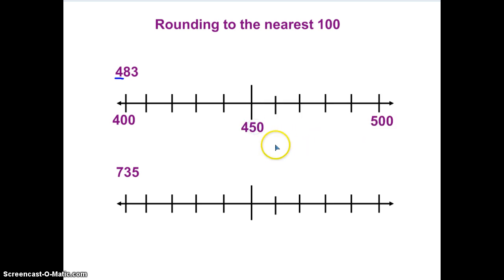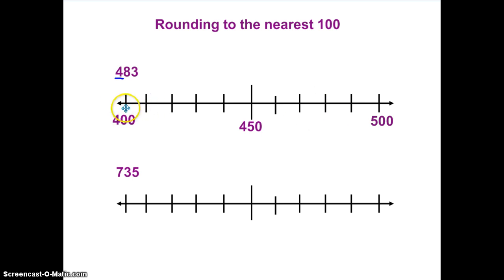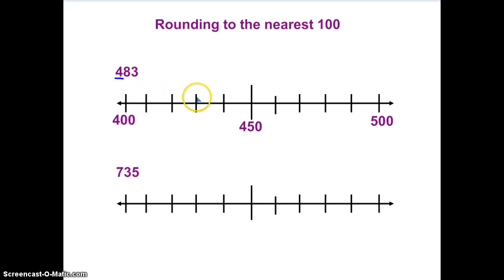I'm not dealing with fives anymore, I'm dealing with fifties: 0, 50, 100. In this case, 400, 450, 500. Let's count — usually there are ten spaces on the number line. But now this is not 401, 402, 403. If this is 450, and this is 400 and 500, that means each one of these places is now ten: 400, 410, 420, 430, 440, 450, 460, 470, 480, 490, and 500. So that's going to change where I put my numbers on the number line.